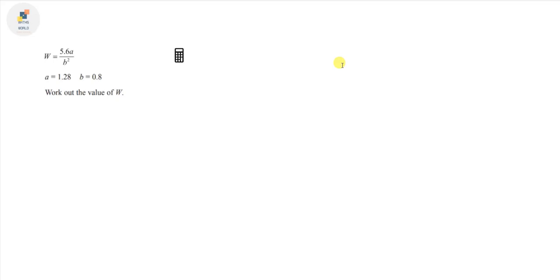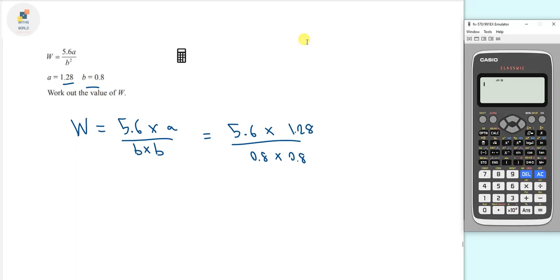Let's use another approach this time. This time we will need the calculator since we're using decimals in this problem. We've got W equals 5.6A divided by B squared. We can rewrite W to make it easier to understand - that's the same as 5.6 times A divided by B times B. Now we can substitute in these values. W equals 5.6 times 1.28 divided by 0.8 times 0.8.